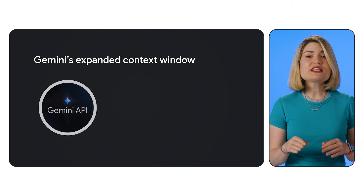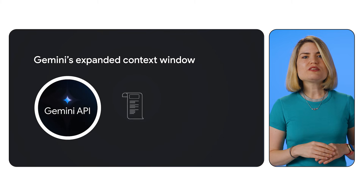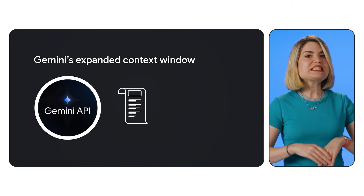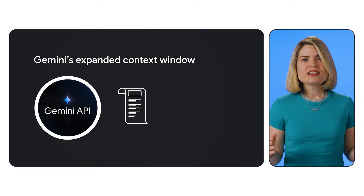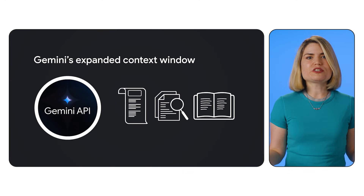With Gemini's expanded context window, you can feed the model the entire story, the complete research paper, or even a whole book or video. This allows the model to develop a much richer understanding of the information, leading to more insightful and coherent responses.